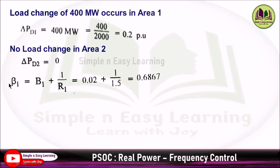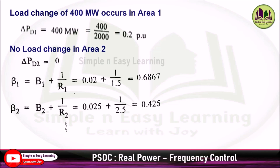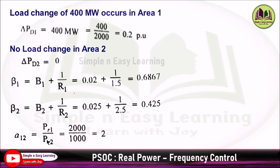Now we calculate the frequency bias constants. β1 = B1 + 1/R1 = 0.02 + 1/1.5 = 0.6867 pu-MW/Hz. β2 = B2 + 1/R2 = 0.025 + 1/2.5 = 0.425 pu-MW/Hz. The rated power ratio a12 = Pr1/Pr2 = 2000/1000 = 2.